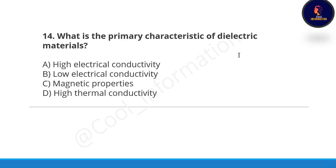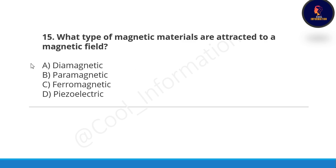Next question: what is the primary characteristic of dielectric materials? We are now covering questions from the last unit. We will also discuss more questions from units four and five, so keep patience and watch till the end. Options are: high electrical conductivity, low electrical conductivity, magnetic properties, or high thermal conductivity. Correct option is B, low electrical conductivity.